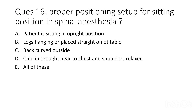Fifteenth question: what is the proper positioning setup for the sitting position in spinal anesthesia? Options are: patient sitting in upright position, legs hanging or placed straight on the operating table, and back curved outward. The correct answer is all of these — all these positioning setups must be done for proper positioning in spinal anesthesia.